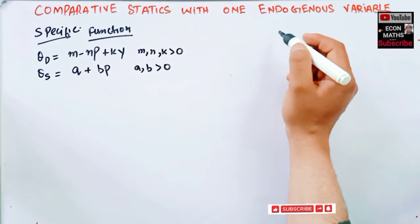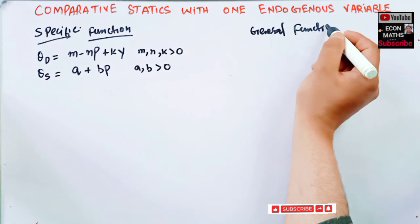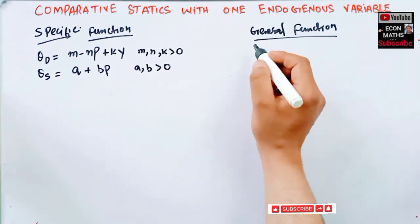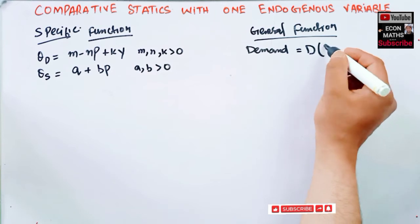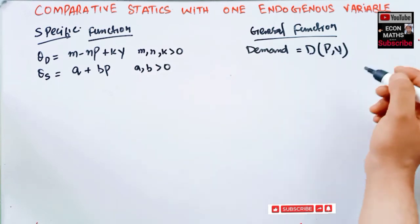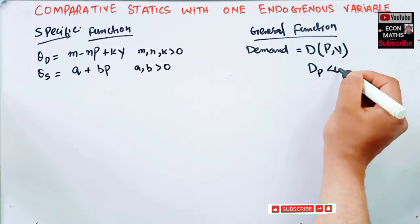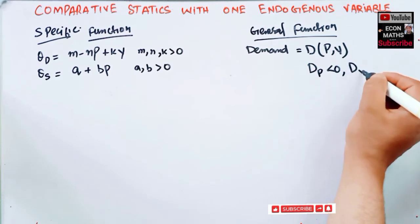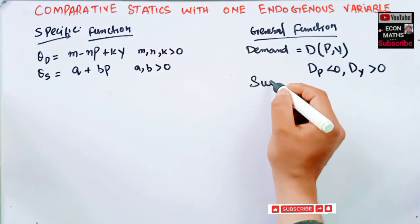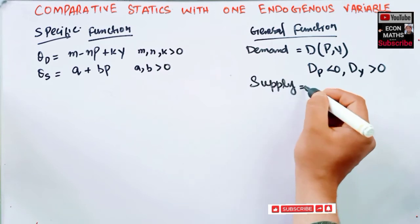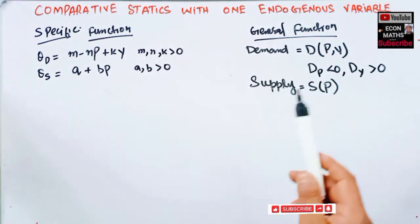By contrast, a general function could be written as: D = D(P, Y), where the partial derivative with respect to P is less than zero and with respect to Y is greater than zero. Similarly, supply is given as S = S(P), a function of price only. So these are the specific and general function forms we can use for comparative statics.